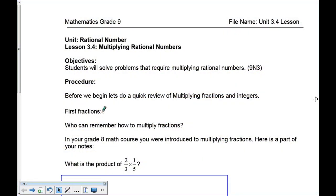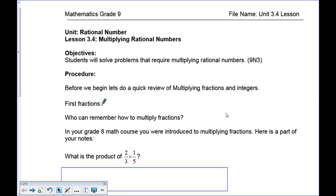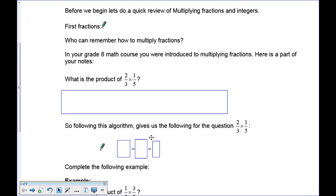Welcome to lesson 3.4. In this lesson we're going to work on multiplying rational numbers. Rational numbers are all numbers that have decimals which repeat or terminate, and they can always be written in fraction form. What we're really asking you to do here is to multiply positive and negative fractions and decimals. Let's begin with a quick review of multiplying fractions and integers.